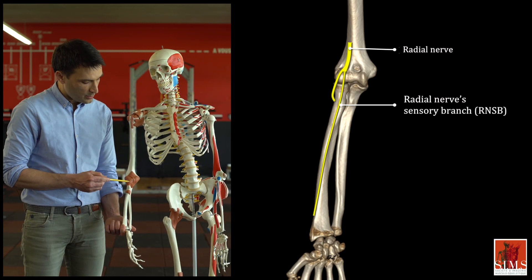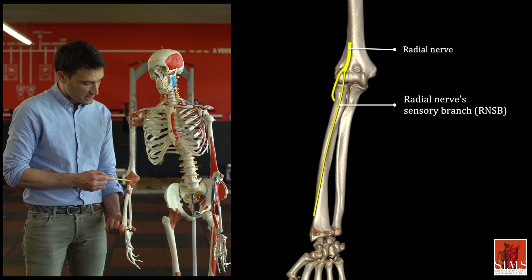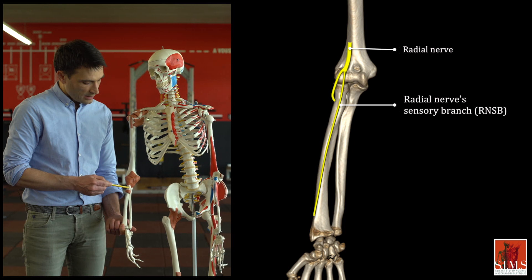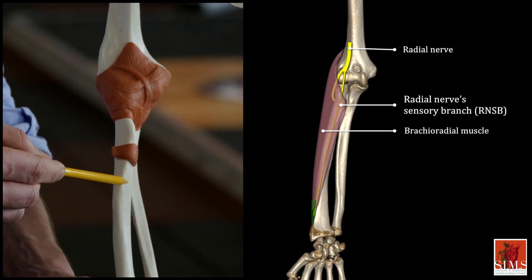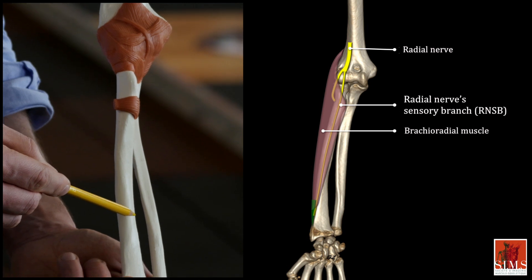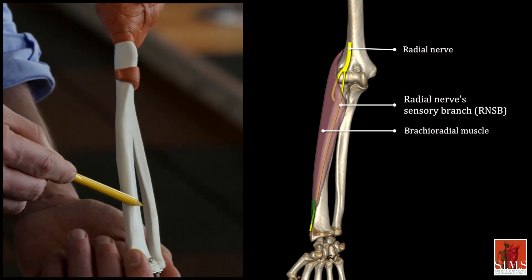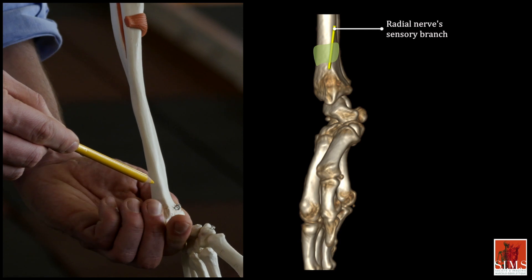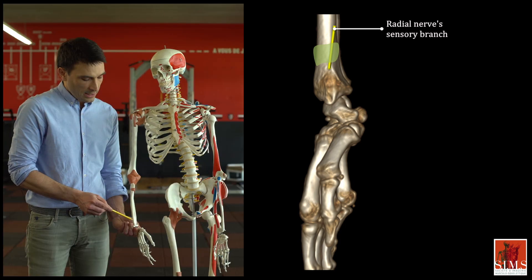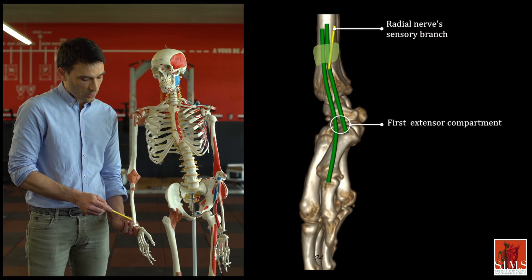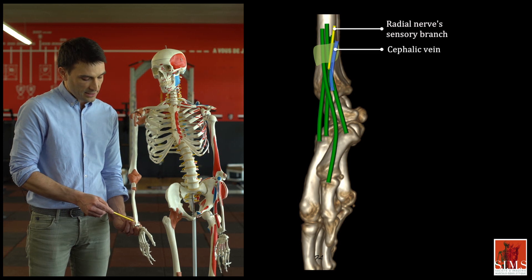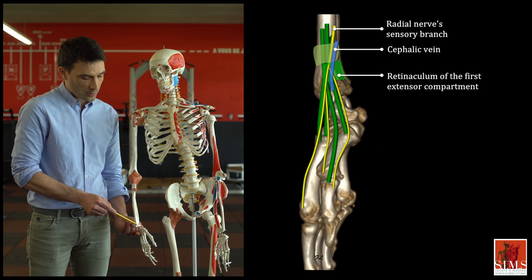The second anterior branch, a more superficial sensory branch, runs on the anterolateral surface of the forearm deep to the brachioradialis muscle. In the lower third, it passes under the brachioradialis tendon to reach the lateral surface of the wrist beneath the skin, and intersects the cephalic vein at the second extensor compartment and the retinaculum of the first extensor compartment.